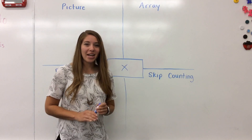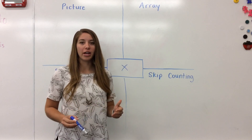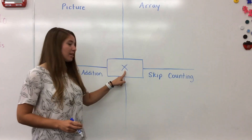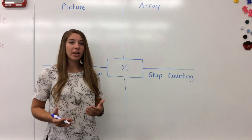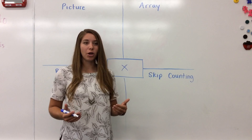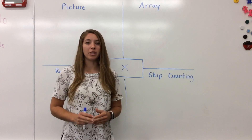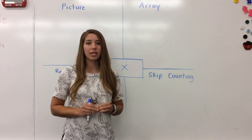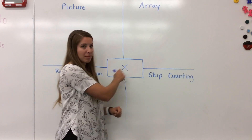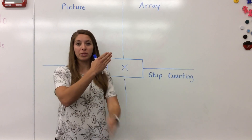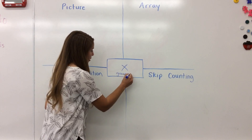Alright everybody, today I am going to be showing you the four strategies that we learned here at John F. Long to help us multiply. Some of you may have seen this symbol before — we call this the multiplication sign or the times sign. Multiplication is actually very easy, as long as you know what it means. Multiplication is just finding the total amount of objects when those objects are split up into equal groups. When you see the times sign, you should be thinking 'groups of,' and if you can do that, you will have no problem multiplying.